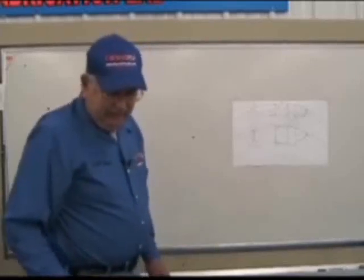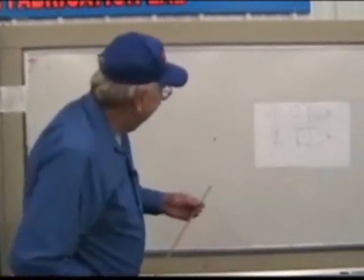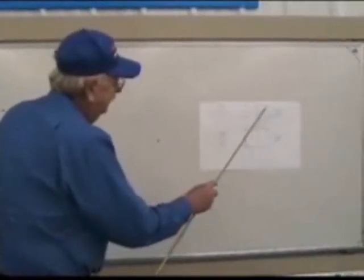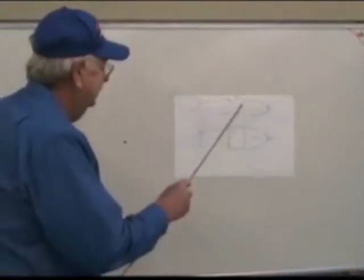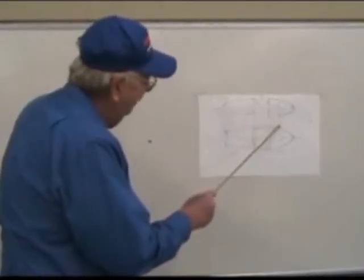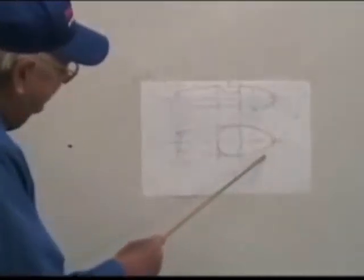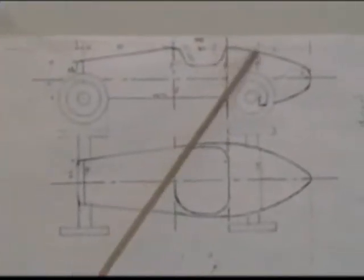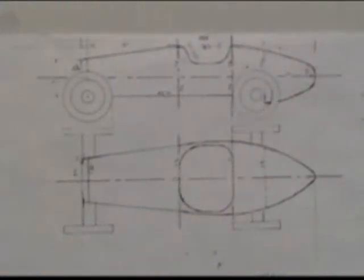In the event that we are successful in building this body right here and you decide that you want to make this a little like a Model A Roadster body, all you've got to do is go back in here and change these lines, and you can regenerate the back section and make it into a little Roadster. It'll be just neat as it could be.